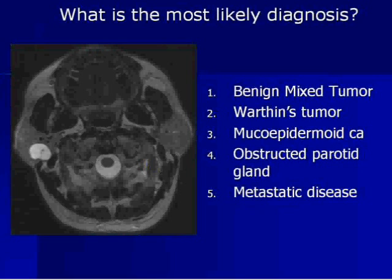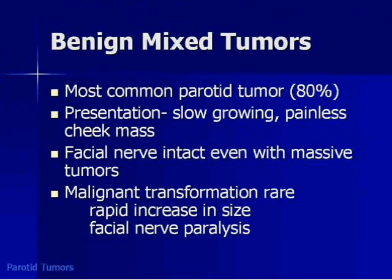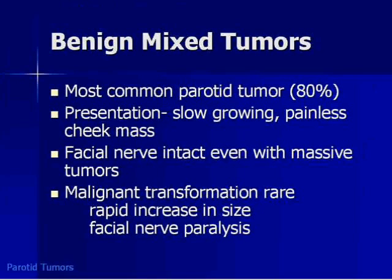Very good. This is a benign mixed tumor — the most common tumor of the parotid gland. If you see a well-defined solitary lesion in the parotid gland, even without additional features, if you guess benign mixed tumor you'll be right most of the time. These tumors are slow-growing and painless, presenting as a cheek mass. Even if they get very large, the facial nerve should be intact. They can undergo malignant transformation — which is rare — and you suspect it when you see rapid increase in size and/or facial nerve paralysis.